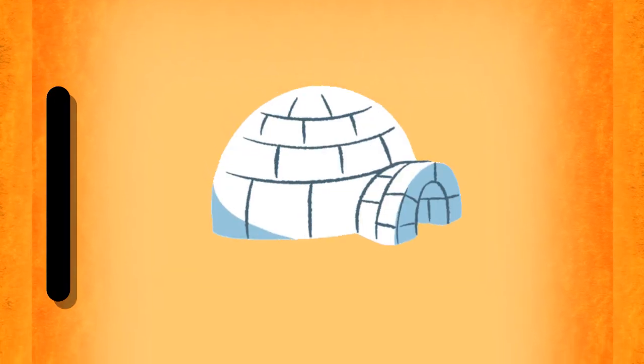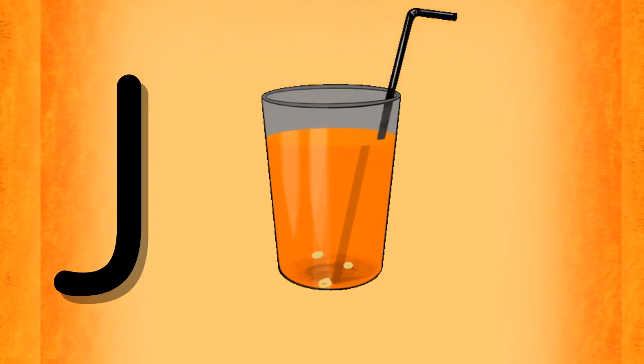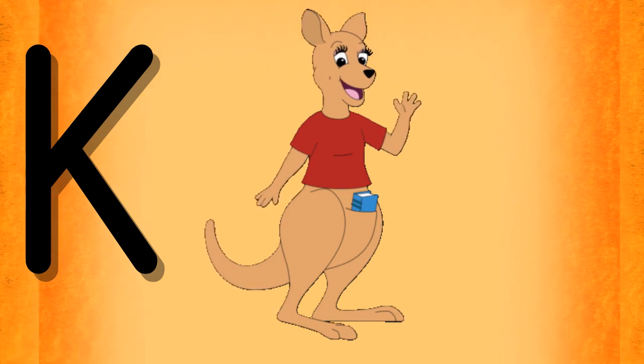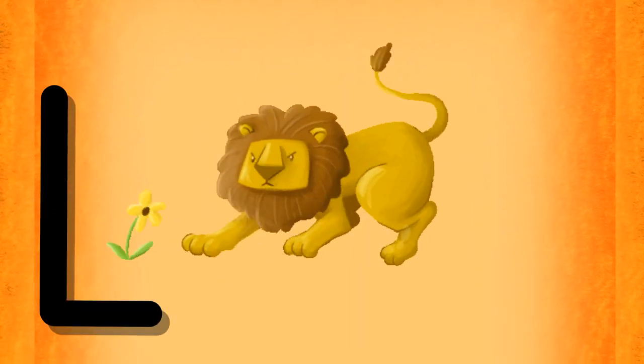I is for Igloo, I-I-Igloo. J is for Juice, J-J-Juice. K is for Kangaroo, K-K-Kangaroo. L is for Lion, Lion.